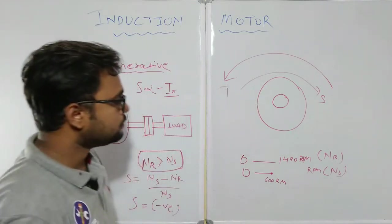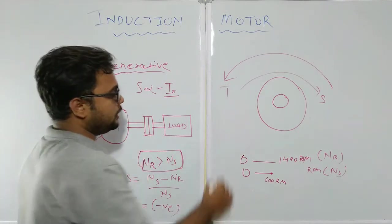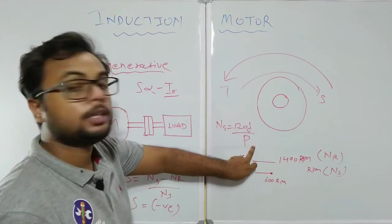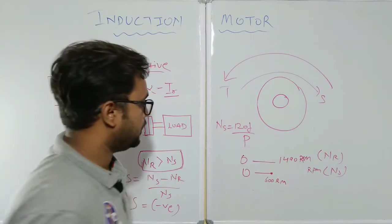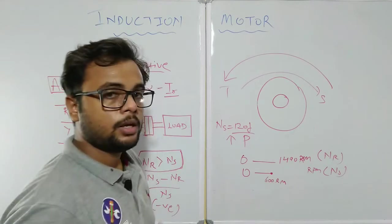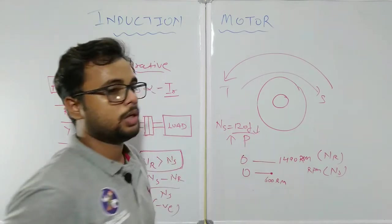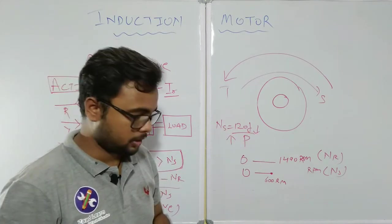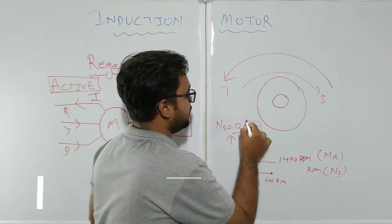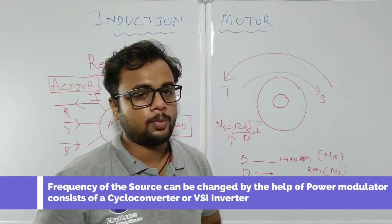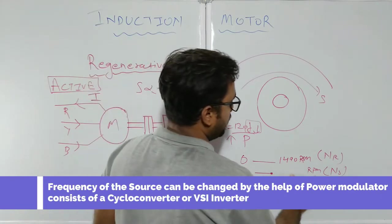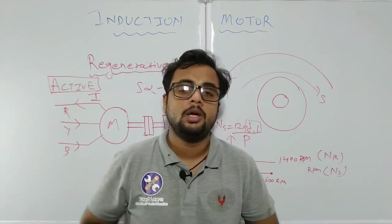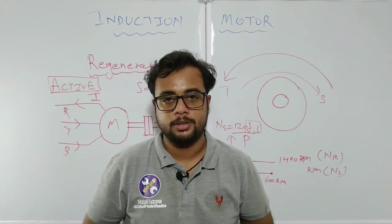The question is how we can decrease the value of NS. We know the formula NS equals 120F divided by the number of poles. By changing the frequency or the number of poles, we can achieve variation in NS. If we increase the number of poles, NS decreases. If we decrease frequency, NS also decreases. We generally prefer the frequency reduction method, since changing poles during running is not preferable. By reducing frequency so that NS drops to 600 RPM, the motor will supply active power back to the supply — this is how an induction motor achieves regenerative braking.